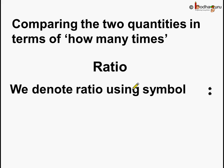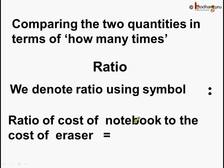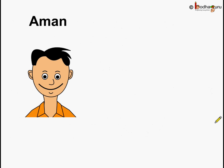We denote ratio using the symbol colon. So we write: the ratio of the cost of the notebook to the cost of the eraser is equal to 4 colon 1. And we read it as '4 is to 1.' Now let us take another example.